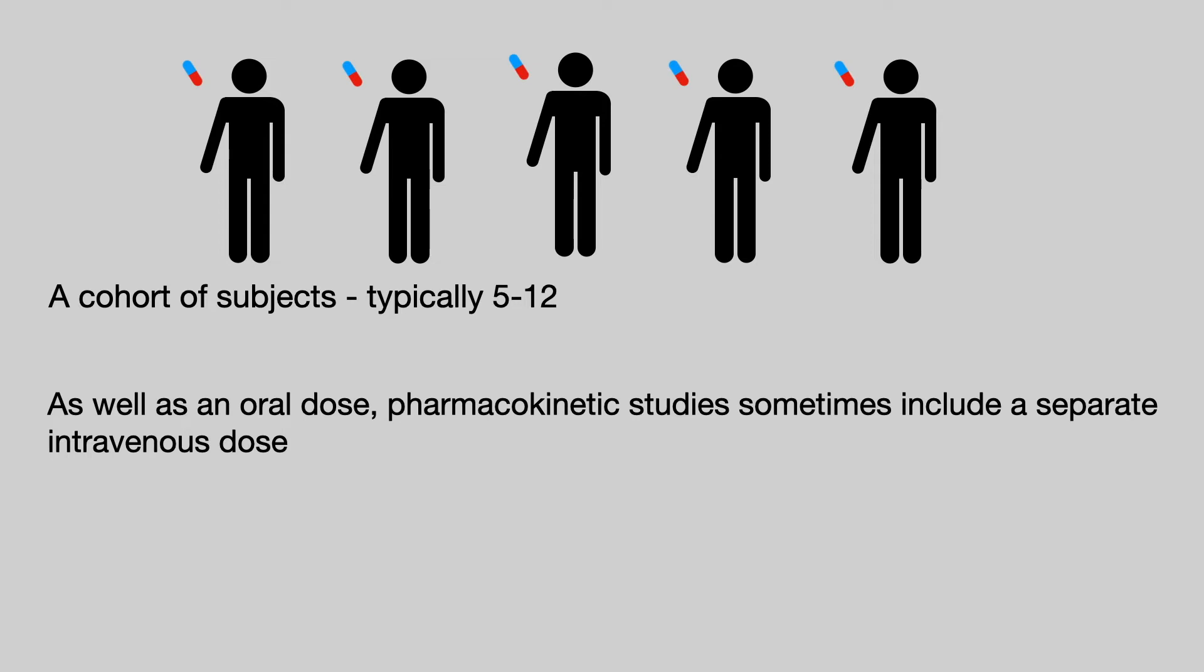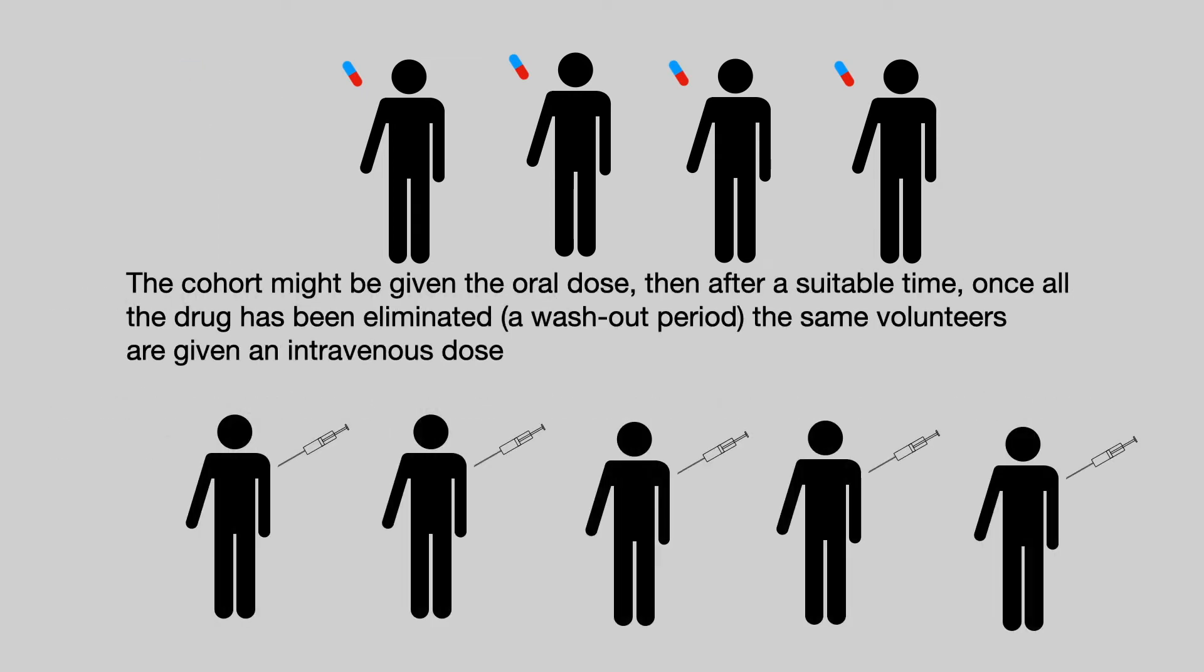As well as an oral dose, pharmacokinetic studies sometimes include a separate intravenous dose. The cohort may be given the oral dose. Then after a suitable period of time, once all the drug has been eliminated, that in the jargon is known as a washout period, the same volunteers are then given an intravenous dose. This is somewhat simplified as quite often you randomise the individuals between the oral and intravenous administrations.